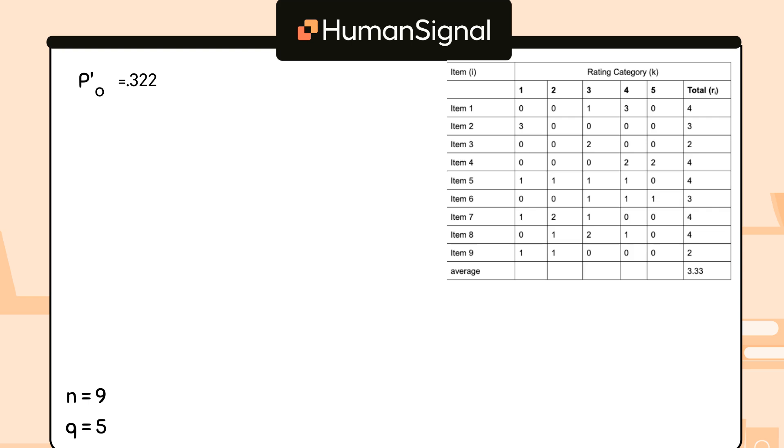Finally, we can calculate our overall observed percent agreement by using the formula on the screen. Here, n times r bar is the total number of ratings. In this case, that's 30. We plug into the formula 0.322 times 1 minus 1 divided by 30 plus 1 over 30 equals 0.345.